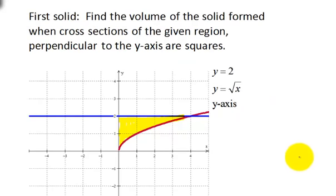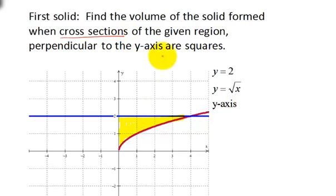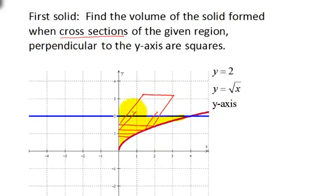The first solid we're going to define by taking cross sections perpendicular to the y-axis and making them squares. The first thing to do when you're doing these volume problems is to interpret what's going on, and I like to draw a picture. So if we're looking at cross sections or slices — think of these as slices — we want them perpendicular to the y-axis, so we're going to slice in this direction. Each one of these cross sections is going to be a square, popping off the page, like slices of bread that are smaller and smaller as you approach this point here.